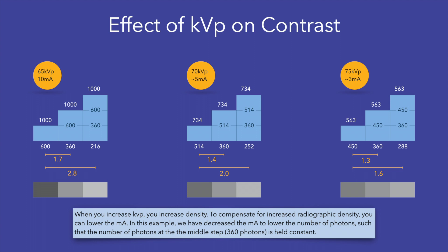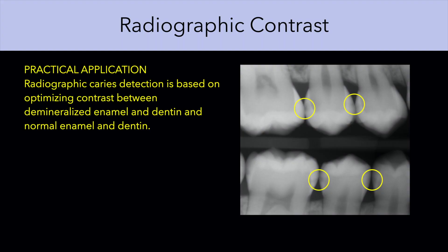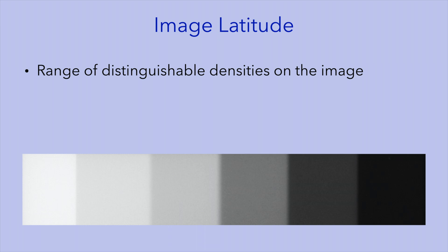In a third scenario with three different exposure settings, the settings are adjusted such that the number of photons exiting at the middle step — 360 photons — is constant in all three imaging situations. Thus, the radiographic density of the middle step will be the same in all three images. However, the density of the adjacent steps varies, demonstrating that contrast decreases as KVP increases. Carious detection is based on differentiating between normal enamel and dentin and demineralized enamel and dentin. Demineralized enamel and dentin appear radiolucent, providing radiographic contrast between normal structures and carious lesions.